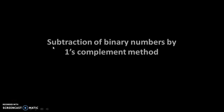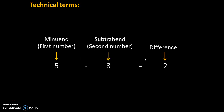Hello Friends. Today we will see subtraction of binary numbers by one's complement method. Let's try to understand some technical terms. 5 minus 3 is 2. Here 5 is the first number, which is called the minuend. 3 is the second number, which is called the subtrahend, and 2 is the answer, which is called the difference.